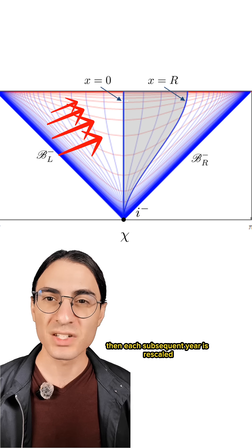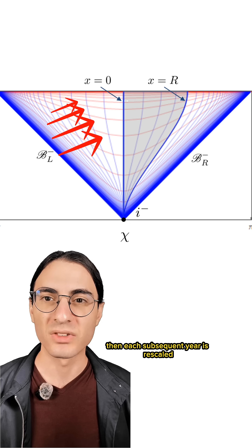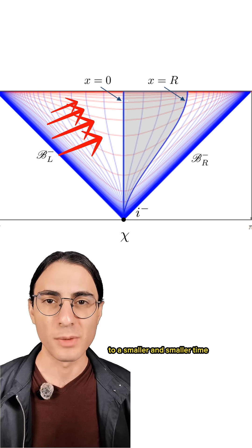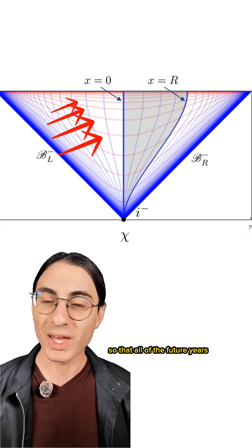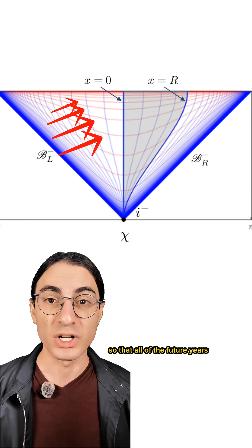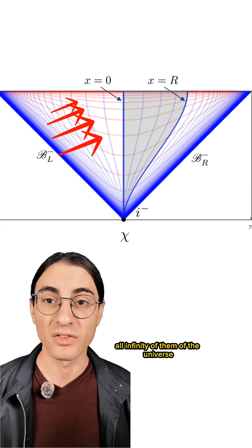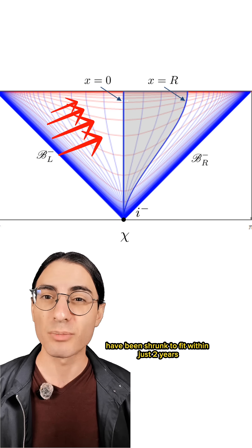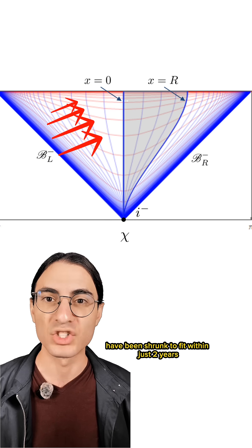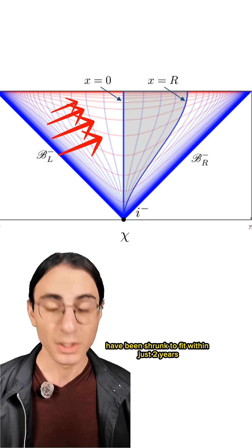If we do that, then each subsequent year is rescaled to a smaller and smaller time, so that all of the future years — all infinity of them of the universe — have been shrunk to fit within just two years. Mathematically, of course.